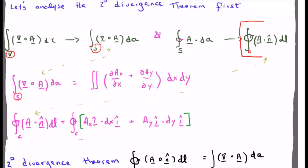Now let's look at this expression here. We are simply going to take the dot product and see what happens. And we are going to get the closed line integral of A sub x i hat dot dx i hat plus A sub y j hat dot dy j hat. Very straightforward stuff.